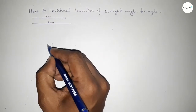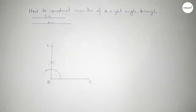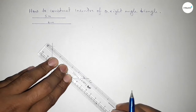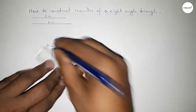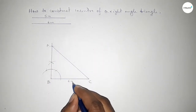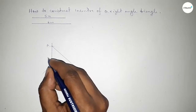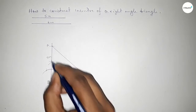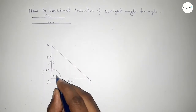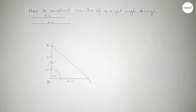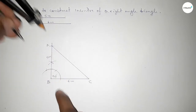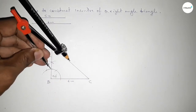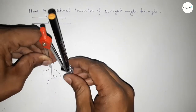Now taking the length five centimeters, putting the compass here and cutting here, so taking here point A. Now joining A and C. So this side is six centimeters and this side is five centimeters — we got a right angle triangle.